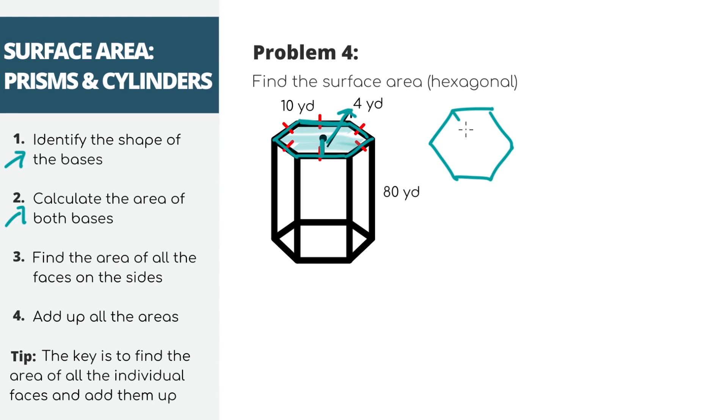If you think about it, a hexagon is just 6 little triangles put together. So if we find the area of one of these triangles, we can multiply it by 6 to get the area of the entire hexagon. Okay, the area of a triangle is 1 half base times height. So 1 half, 10 times 4. This equals 20.